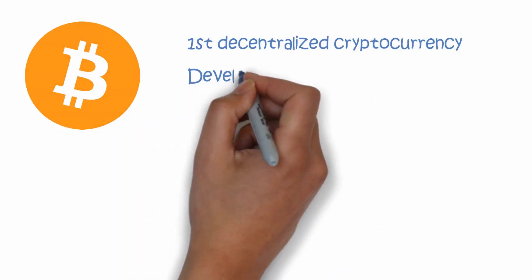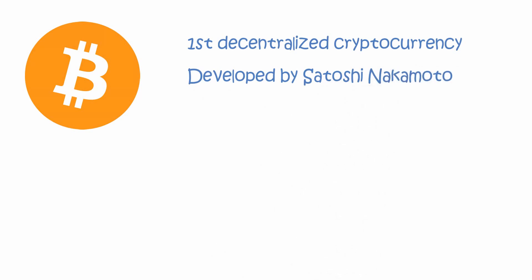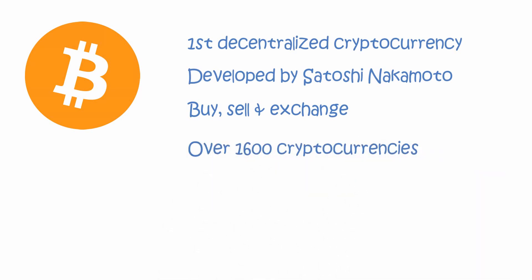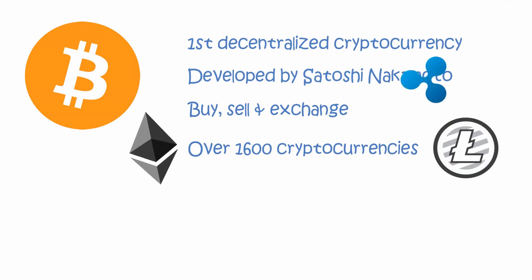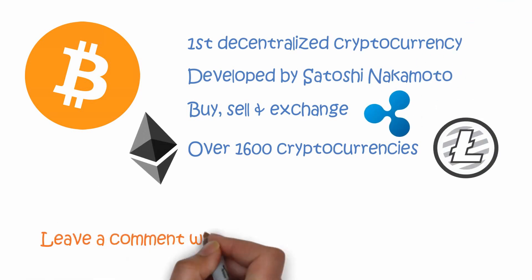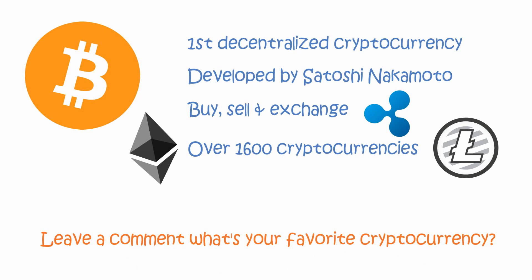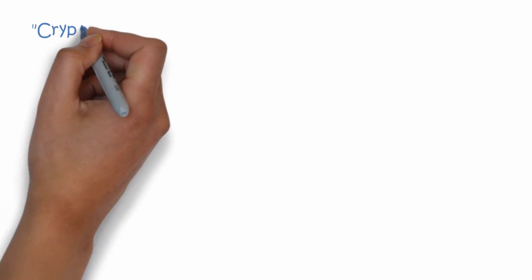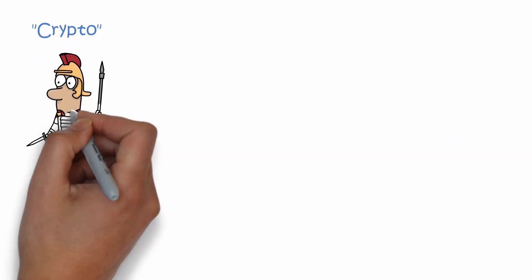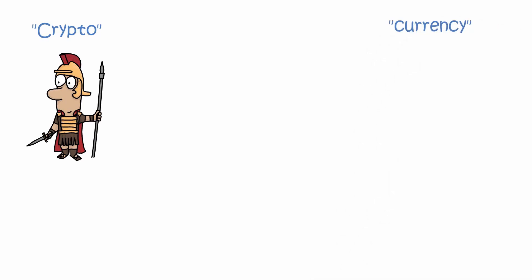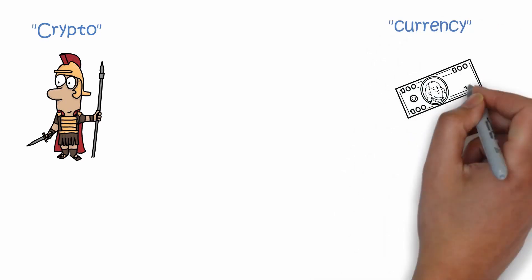Bitcoin was the first decentralized cryptocurrency and it was created by Satoshi Nakamoto. It is online money that you can buy, sell and exchange for different stuff all around the world. There are over 1600 other cryptocurrencies besides bitcoin, like Litecoin, Ethereum, Ripple and so on. The part 'crypto' comes from how the cryptocurrency is protected and the part 'currency' comes from the fact that it is your currency.